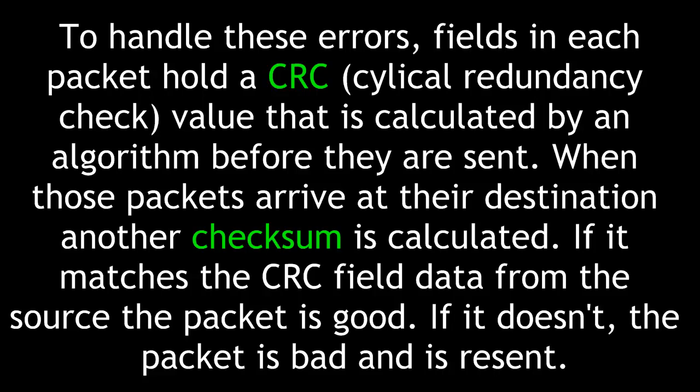To handle these errors, fields in each packet hold a CRC, or Cyclical Redundancy Check value, that is calculated by an algorithm before they are sent. When these packets arrive at their destination, another checksum is calculated. If it matches the CRC field data from the source, the packet is good. If it doesn't, the packet is bad and is resent. This is just one of the ways the field data is used in each packet or datagram, and we can configure IP tables to make use of this.